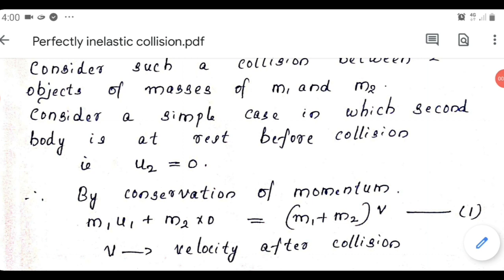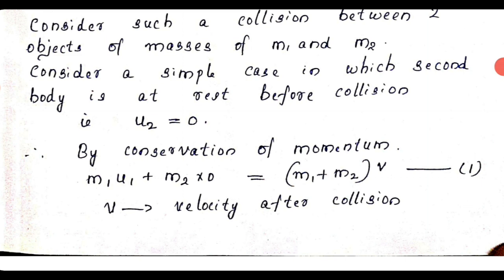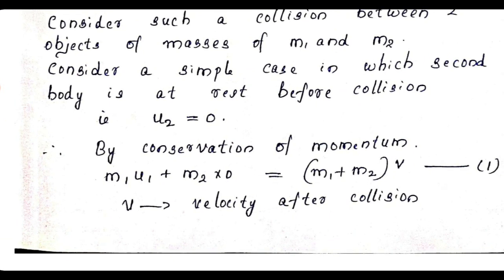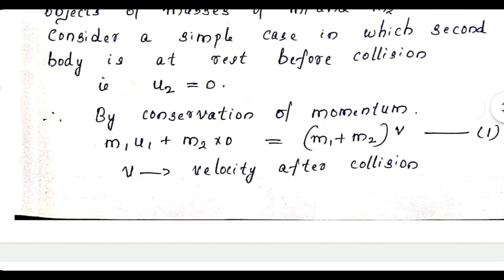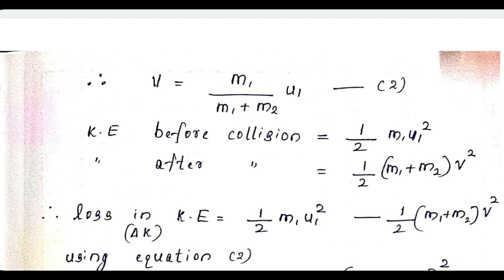Consider an inelastic collision between two objects of masses m1 and m2, where the second object is at rest before collision and the first body approaches with velocity u1. By conservation of momentum: m1·u1 + m2·0 = (m1 + m2)·v, where v is the common velocity after collision. Therefore the common velocity after collision is v = m1 / (m1 + m2) · u1.